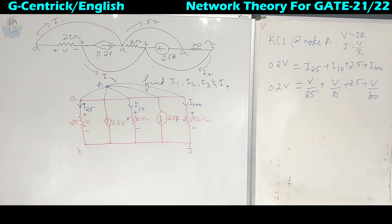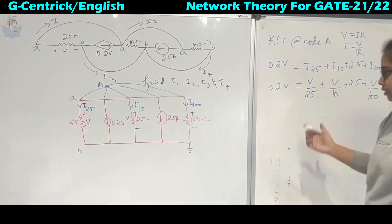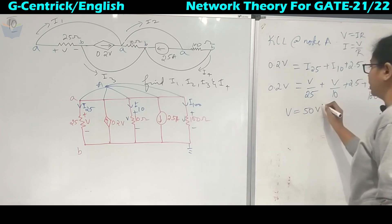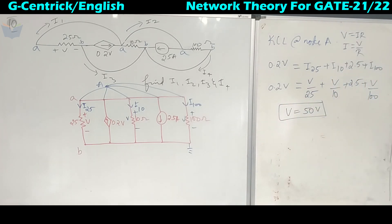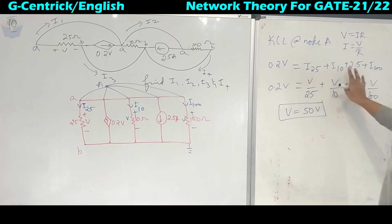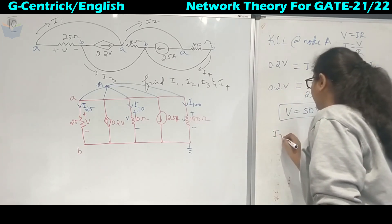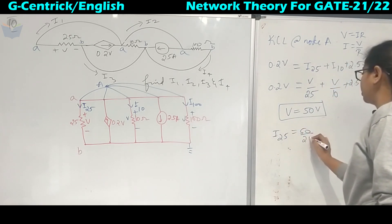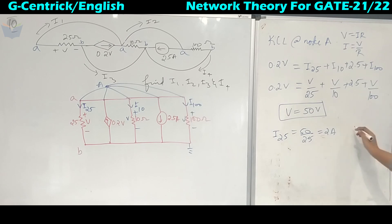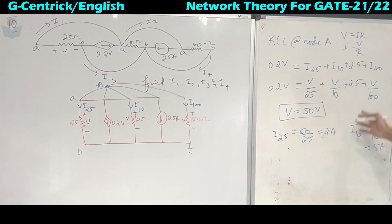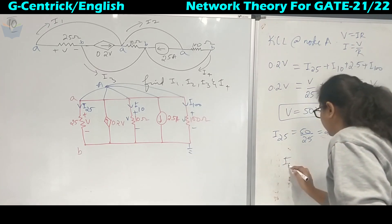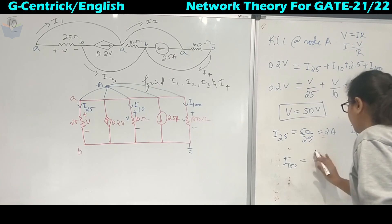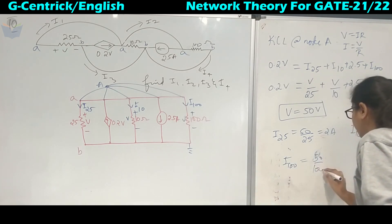Solving for V, we get V = 50 volts. Now we can calculate the branch currents: I25 = 50/25 = 2 amperes, I10 = 50/10 = 5 amperes, and I100 = 50/100 = 0.5 amperes.